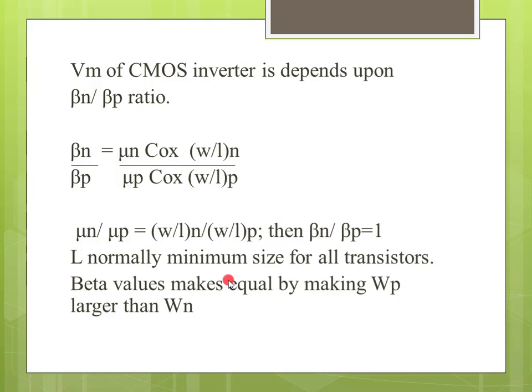If you are studying the CMOS inverter, we have DC characteristics — it is called midpoint voltage, V_M. Midpoint voltage means the transistor is switched at the midpoint voltage. We have NMOS and PMOS. The midpoint voltage is derived from CMOS inverter DC characteristics. V_M depends on the beta N by beta P ratio.